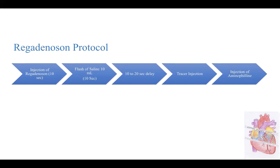We injected regadenosone not in 10 seconds but over one minute. Following the injection, we administered a flush of saline of 10 milliliters, and then after a 10 to 20 second delay we injected our tracer. In this case we used tetrofosmin at a very low dose of 150 megabecquerel, which is around 3.5 millicurie, and at the end we injected aminophylline.